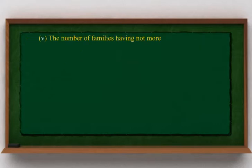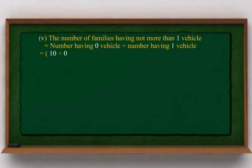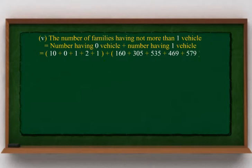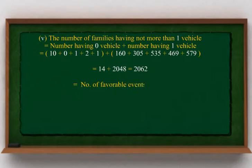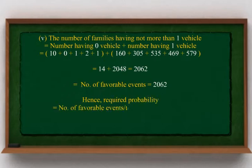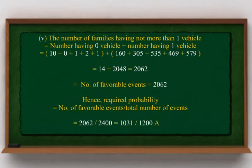The number of families owning not more than one vehicle equals the number having 0 vehicles plus the number having 1 vehicle, which equals 10 + 0 + 1 + 2 + 1 + 160 + 305 + 535 + 469 + 579 = 2062. Hence, the required probability equals 2062 divided by 2400, which simplifies to 1031 divided by 1200.